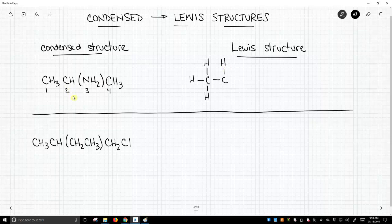Now carbon 2 is attached to both the next group, which happens to be in parentheses, this NH2, and nitrogen is going to need a lone pair to complete its octet. And it is also connected to carbon 4.